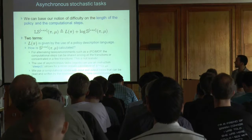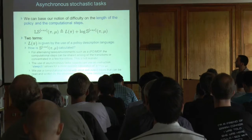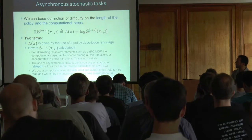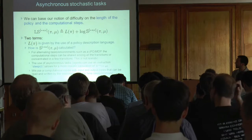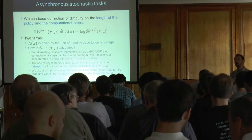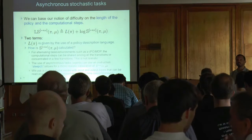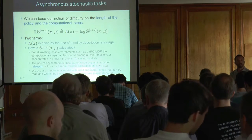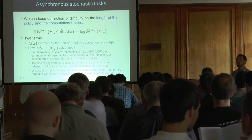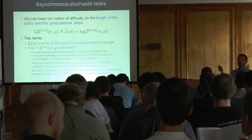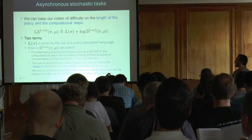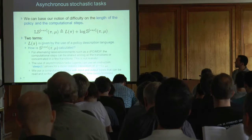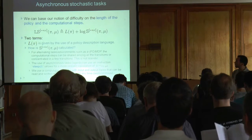Levin's KT complexity is based on two terms: the length of the policy or solution, and the execution steps of the solution. We have to treat execution steps as an argument because on stochastic tasks you may get more or less execution steps — it depends on the environment. So it's not like a deterministic setting where you just execute a program on an input.